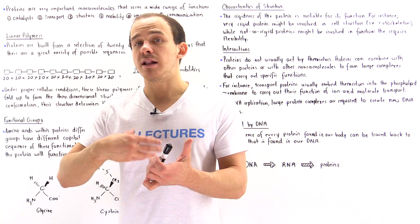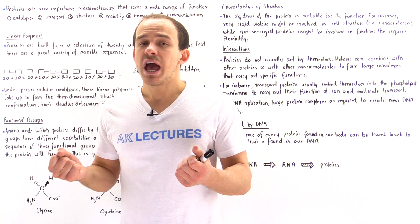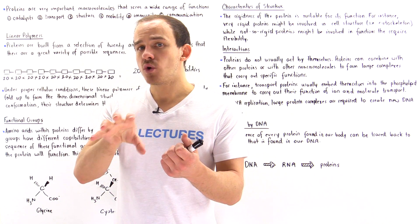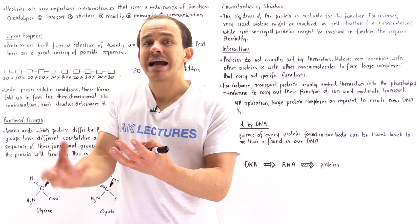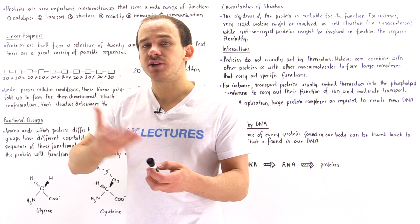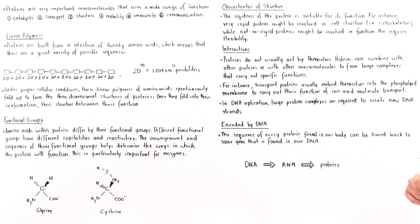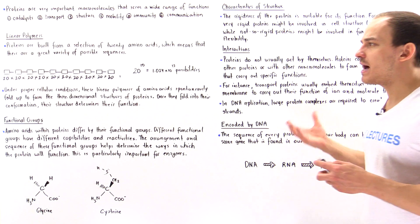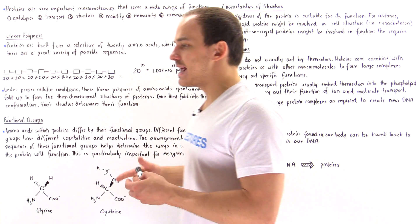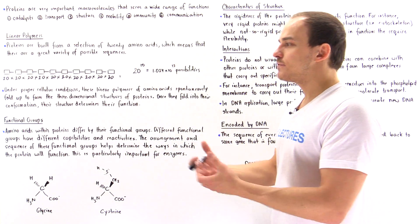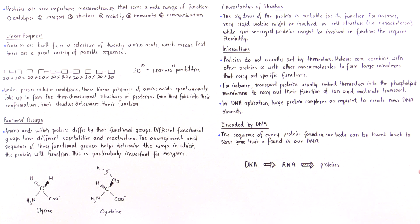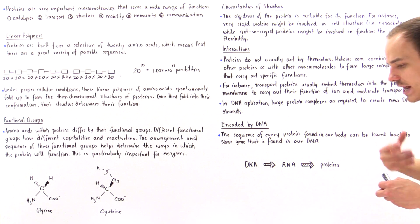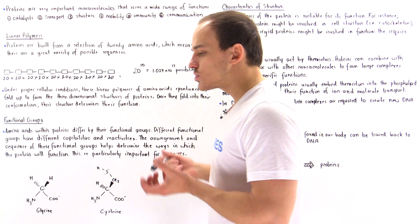Another example is the transport proteins found inside our cell membrane. Cell membranes consist of phospholipids, and these transport proteins have to interact with these phospholipids to be able to transport molecules and ions across the cell membrane. We have many different examples in biochemistry where proteins must interact with other proteins or macromolecules to carry out a specific function.